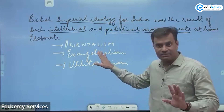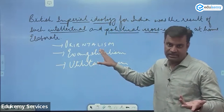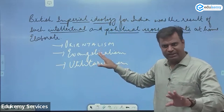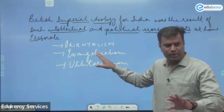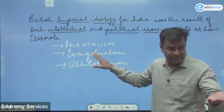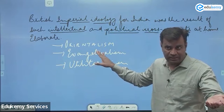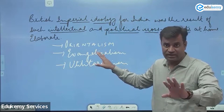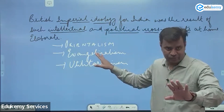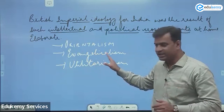For Orientalism, the biggest example is the Asiatic Society of Bengal. Even in Orientalism you can give the example of land revenue settlement. Permanent Settlement is a reflection of Oriental law — one third of the revenue was to be collected as state revenue, even though they had a discriminatory approach.